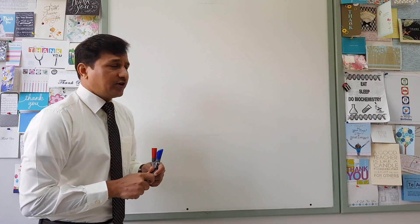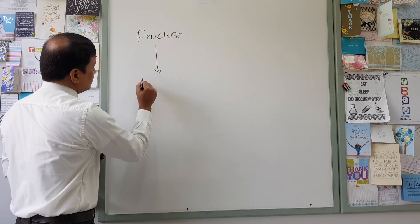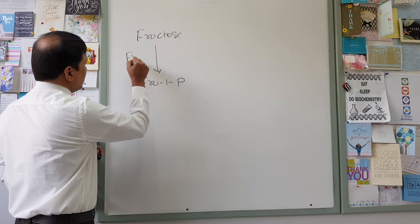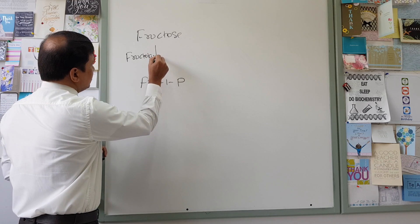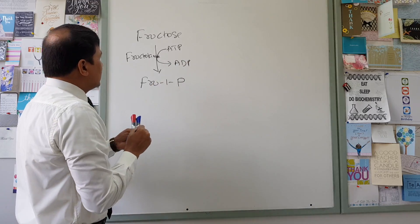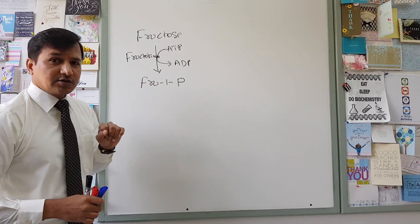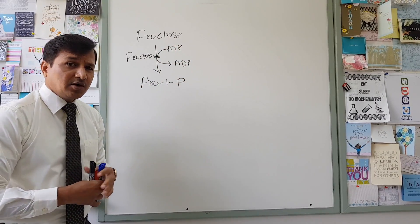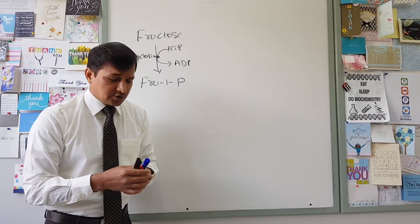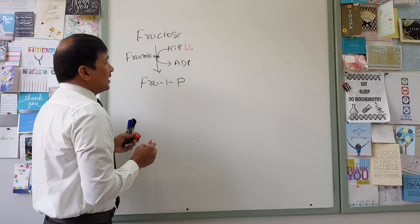Once fructose enters the liver, it is converted into fructose-1-phosphate. This conversion is carried out by an enzyme called fructokinase, during which ATP is broken down to ADP. Because fructokinase is a non-regulated enzyme, it continuously converts fructose into fructose-1-phosphate, causing ATP levels to decrease and ADP to accumulate.